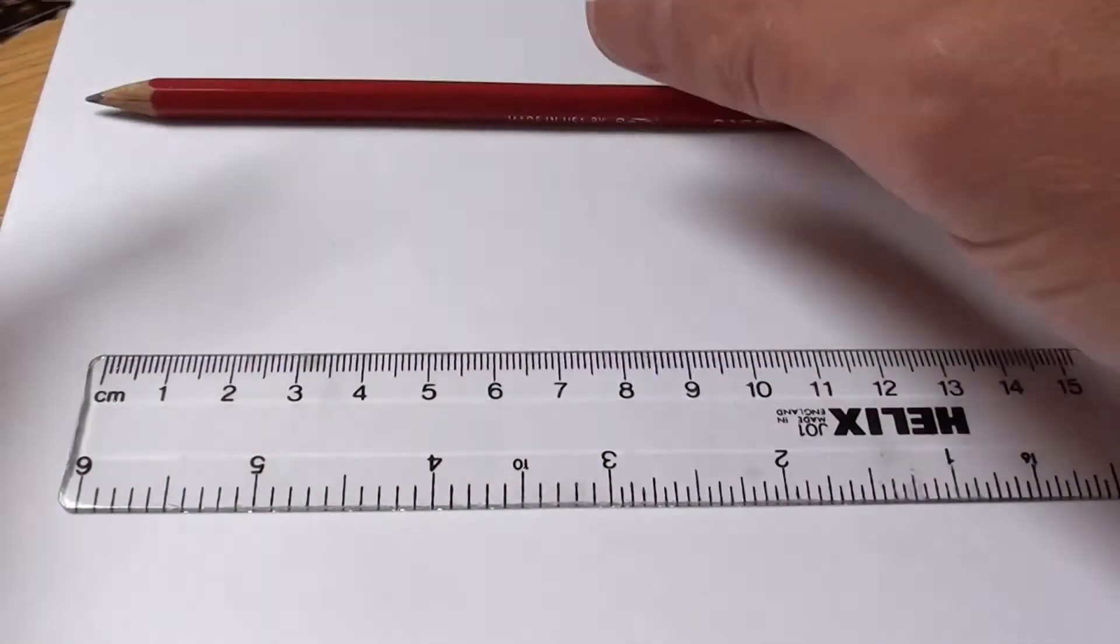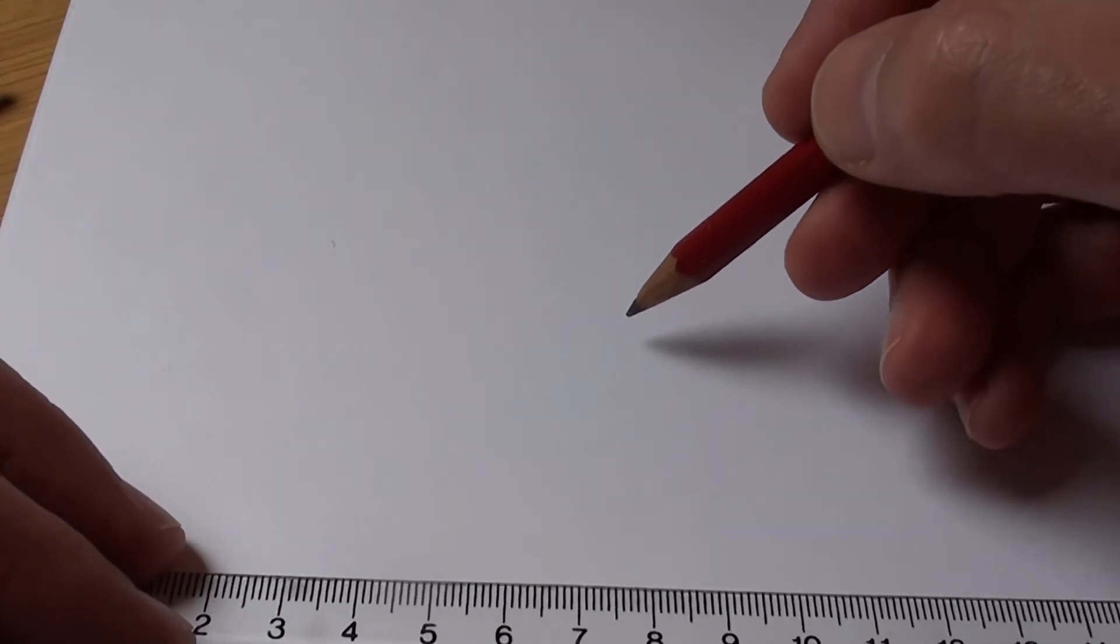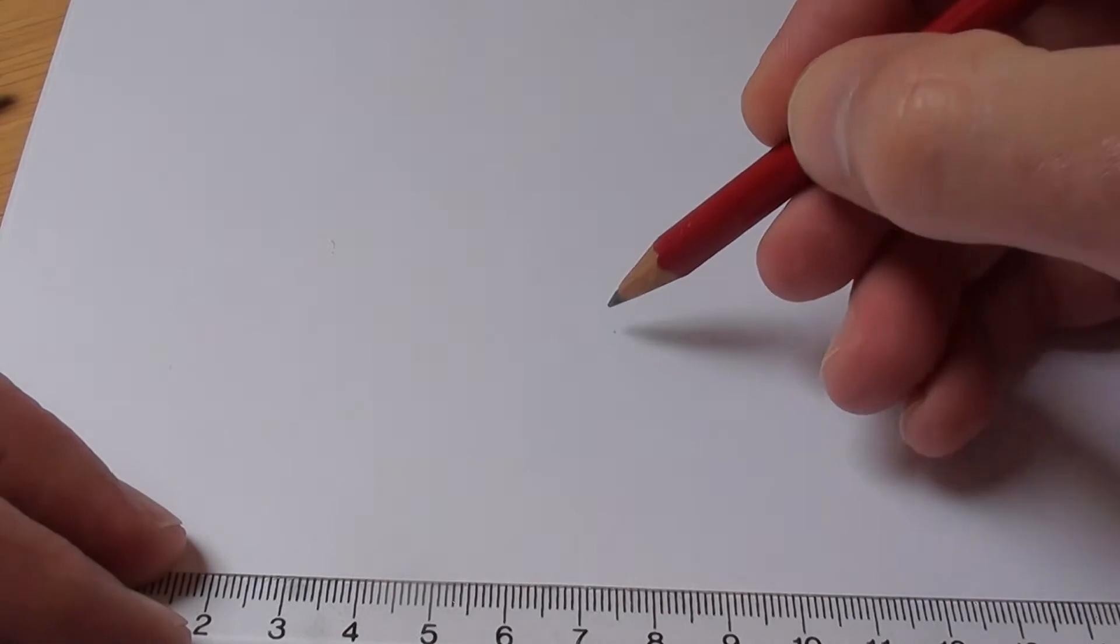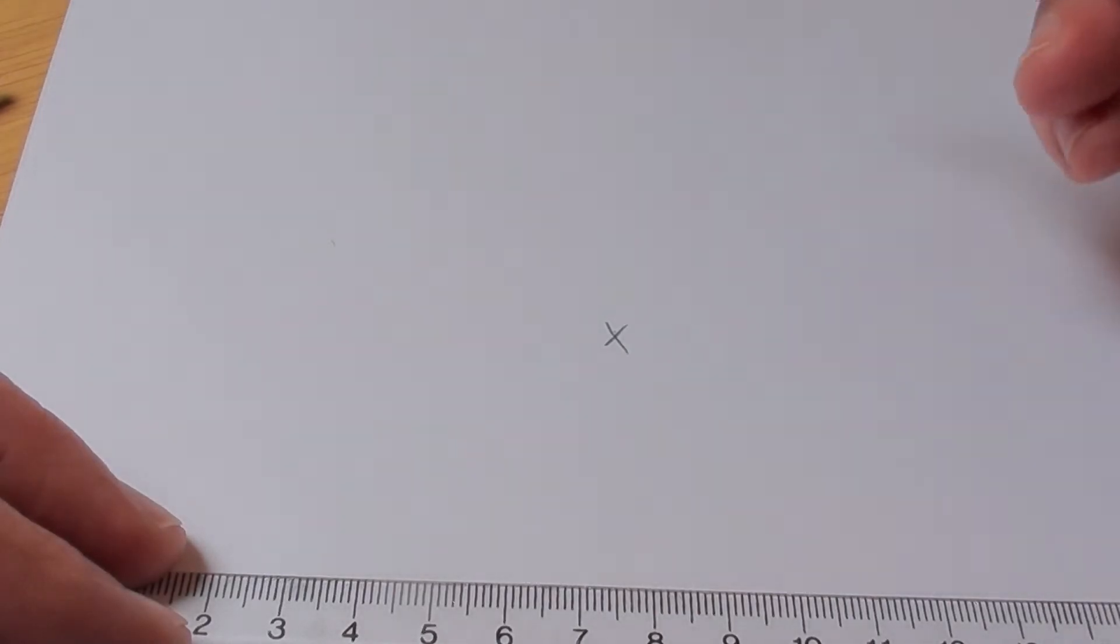So to get started, I'm just going to start by making a little mark somewhere in the centre of a piece of paper. Make a little cross. That's going to be the centre of our spinner.